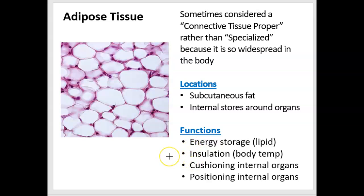We find adipose tissue underneath the skin in subcutaneous fat and internally around organs. The main functions of adipose, you would think, would be energy storage. But really, it provides three other things that are equally if not more important. One is insulation — the subcutaneous fat insulates us from changes in environmental temperature, helping maintain our body temperature. It also cushions internal organs. For example, there are locations internally where you don't want pressure, like on the bladder, and adipose can cushion that as we move. It also helps maintain the position of organs. The kidneys are up against the back of the body wall, and there's adipose coating the outside edges to keep the kidneys in place.